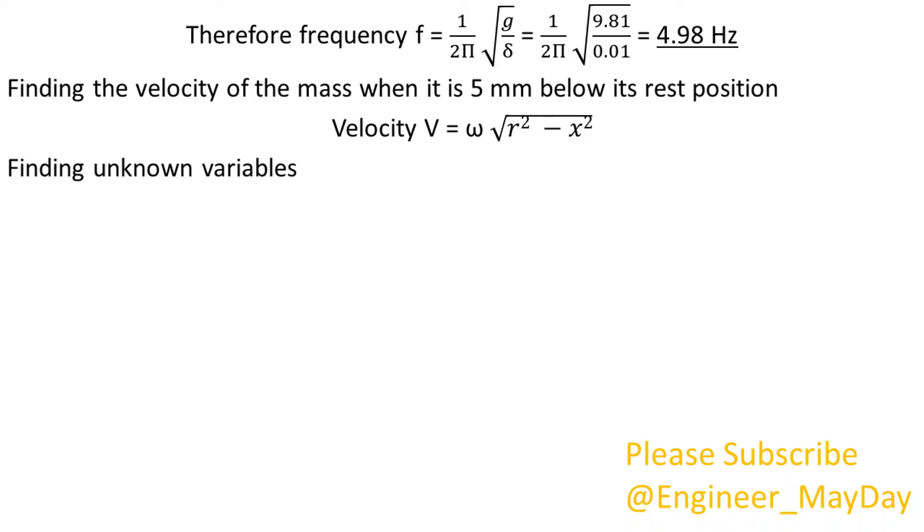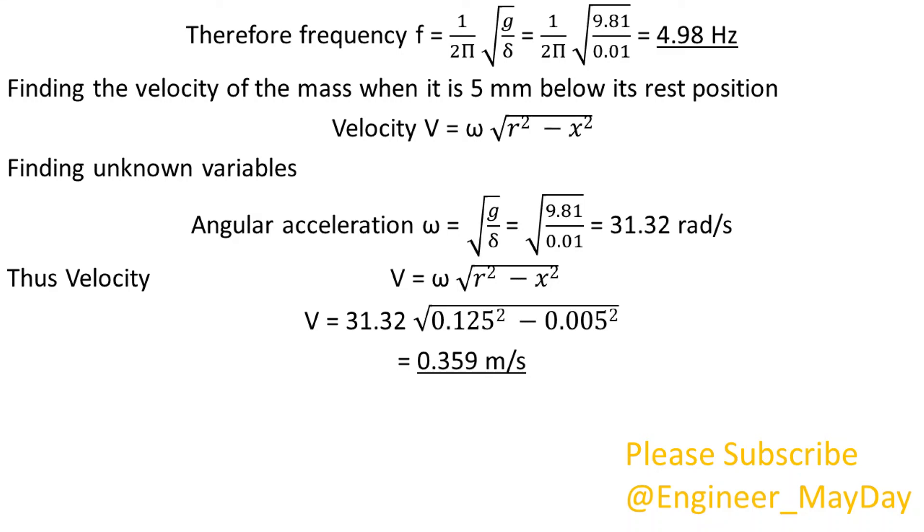Finding unknown variables. Angular velocity omega is given by the square root of gravity divided by extension. This gives us 31.32 radians per second. Thus velocity is equal to 0.359 meters per second.